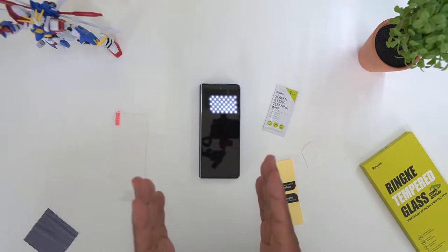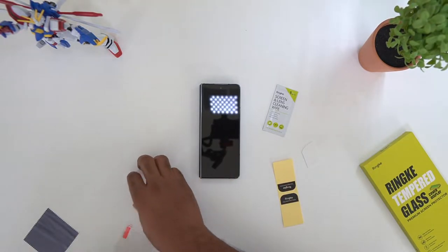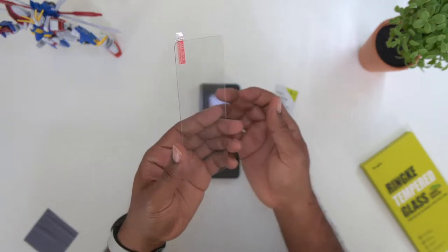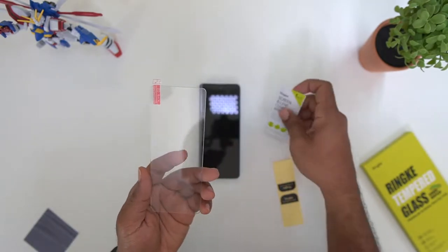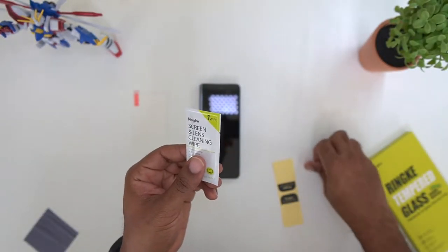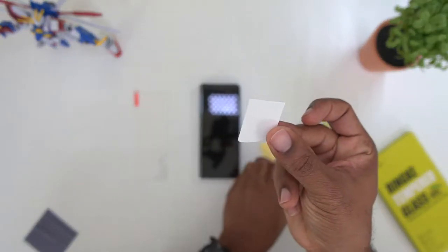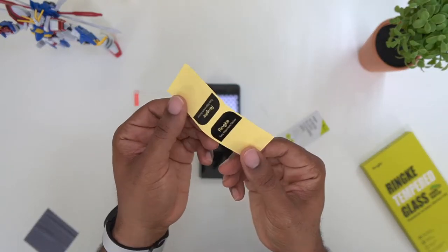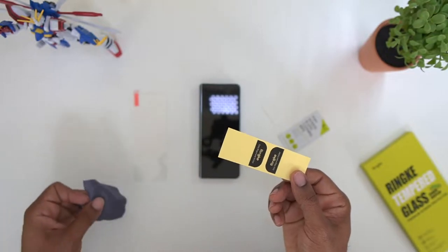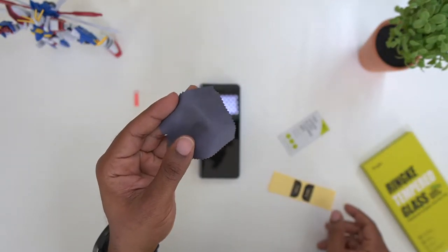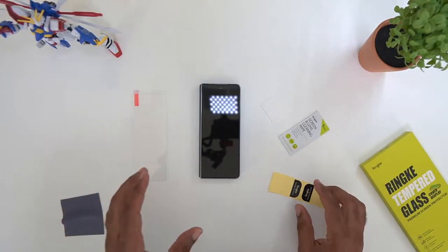In the pack, this is what you're going to get: you're going to get the actual screen itself, and you only get one in this packaging. You get alcohol wipes, you get a squeegee, you get the screen applicator stickers, and you get a microfiber cloth.